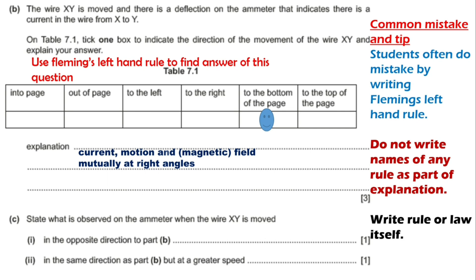So this is actually Fleming's left hand rule, but we should not write the name of the rule — we should write what it says. The next point is: magnetic field lines go from left to right. Since it is a three-mark question, we have to write three points, and those are the three points.